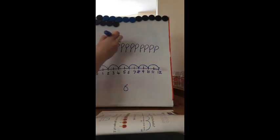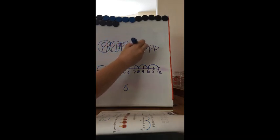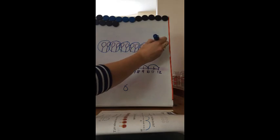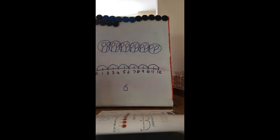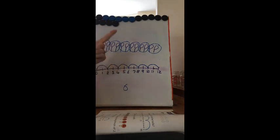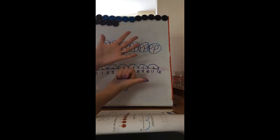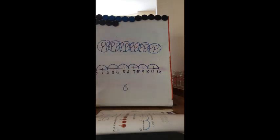Let's double-check: one group of two, two groups of two, three groups of two, four groups of two, five groups of two, six groups of two — so there are six groups of two bats. Let's try our two times table till we get to 12: 2, 4, 6, 8, 10, 12. We got six again, so we must have the right answer.